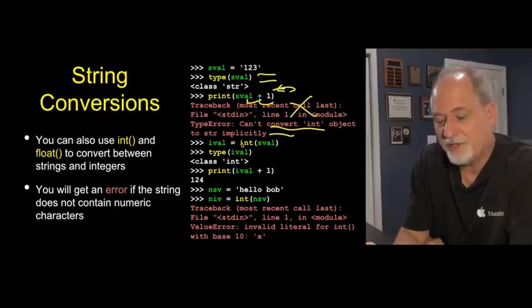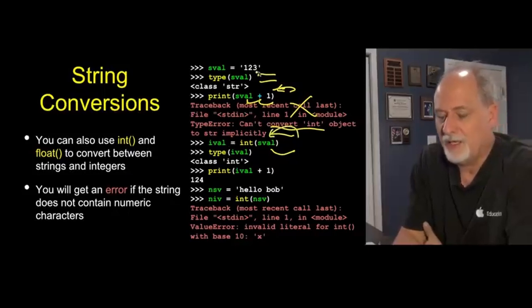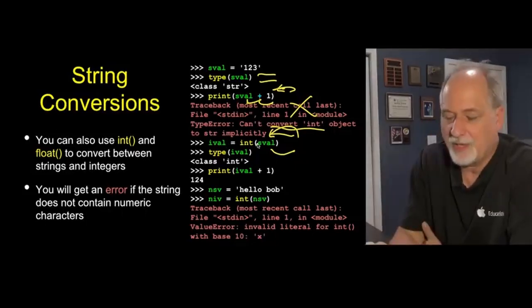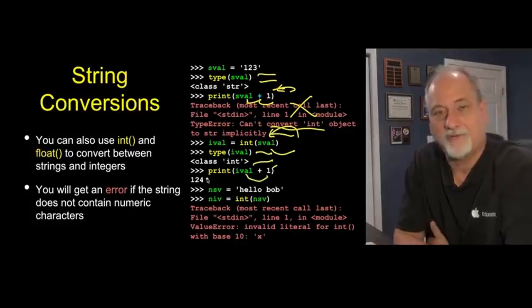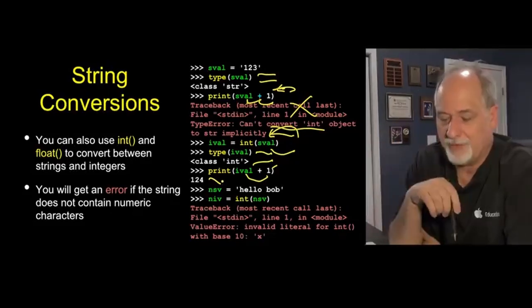But we can convert this. We can call the int function, which is like the float function, and pass a string in. So it says, take this and turn it into an integer. So take the input of sval, which is the string one, two, three, and give me back an integer representation of that, which is going to be 123. So we say, what kind of thing do we get back? Well, we got back an integer. We can now add one to it and get 124. And so you have to manage the type of things, and you can convert from one type to another.